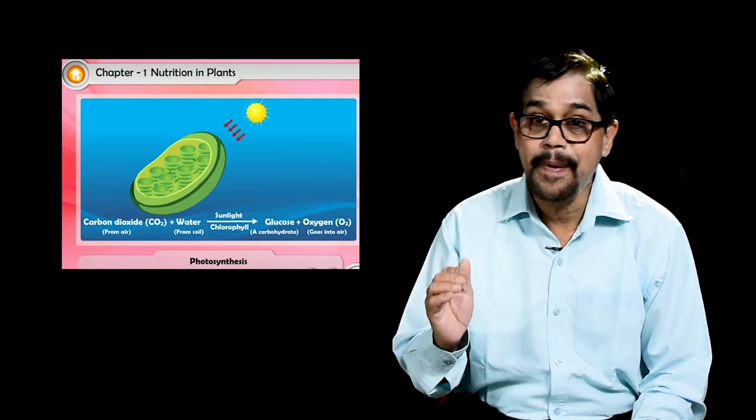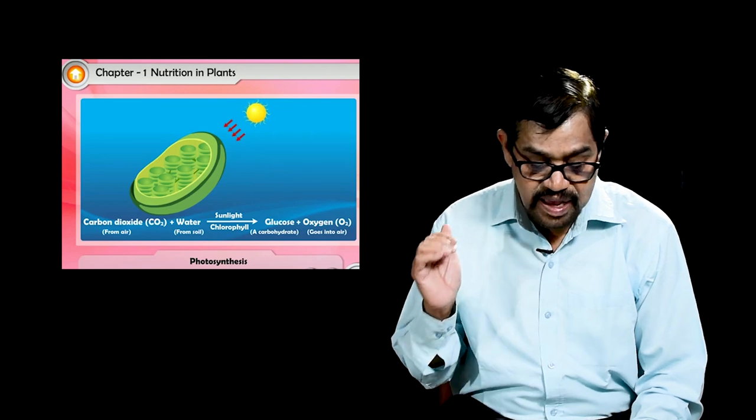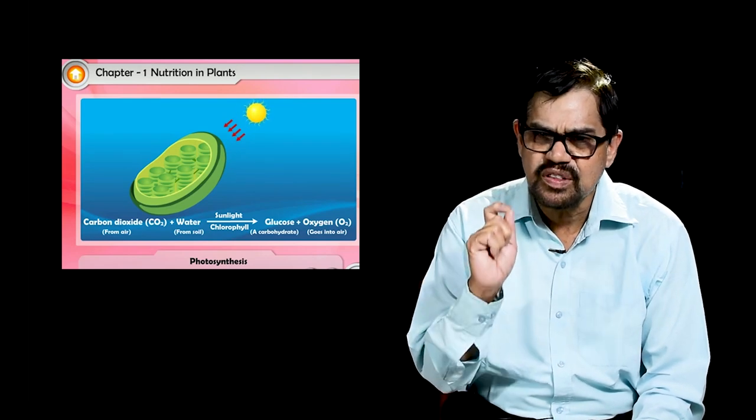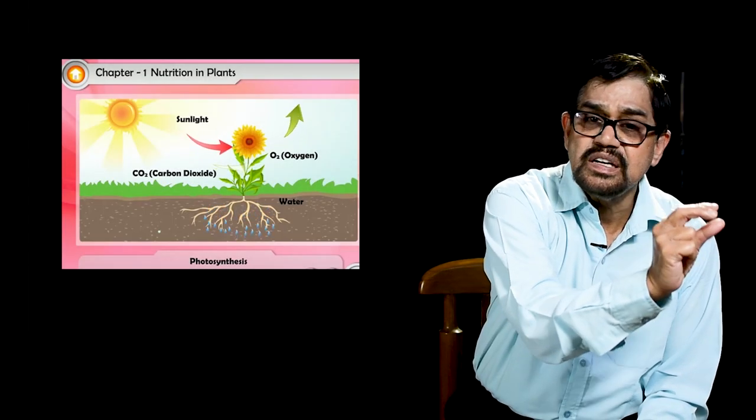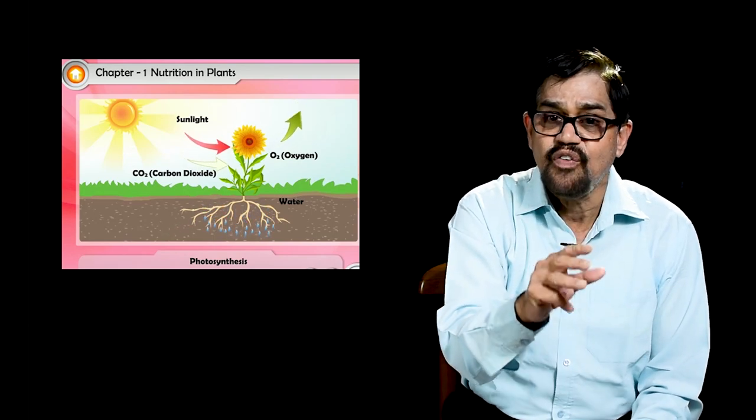The food prepared by green leaves is in the form of the simplest substance called glucose. The plant prepares glucose, which is then carried to certain parts where it is needed for growth or storage. It is carried in the form of sucrose — the cane sugar we eat — and when it needs to be stored, it is stored in the form of starch.